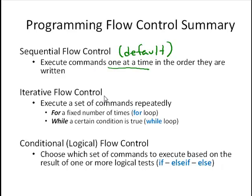Then we have some options to deviate from that. One option is iterative flow control, where we execute a set of commands sequentially, but we repeat that sequence of commands either a fixed number of times with a for loop or while a certain condition or logical test is true. And that would use a while loop.